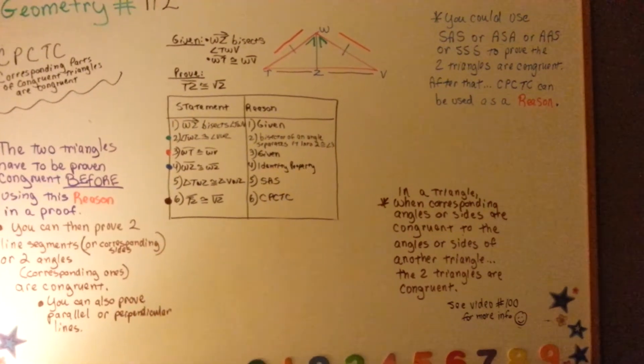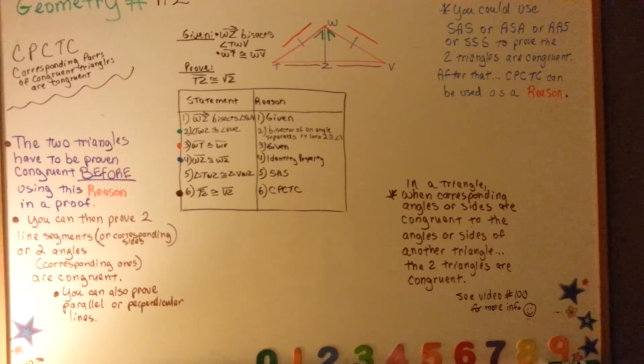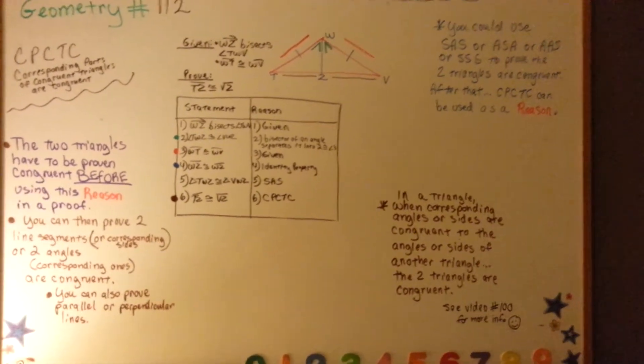So remember, in a triangle, when corresponding angles or sides are congruent to the angles or sides of another triangle, the two triangles are congruent. See video number 100 for more information if you need it.